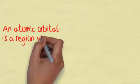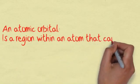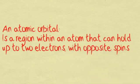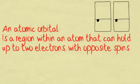An atomic orbital is a region within an atom that can hold up to two electrons with opposite spins. This is a common exam question.